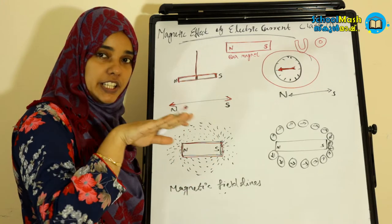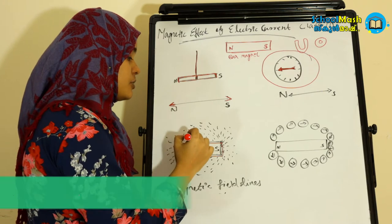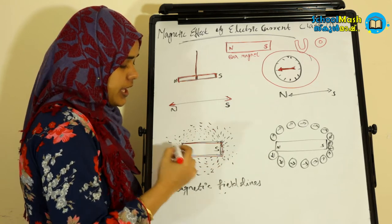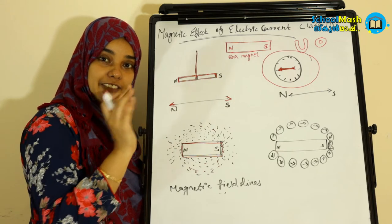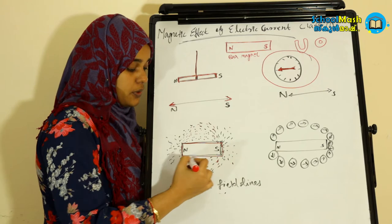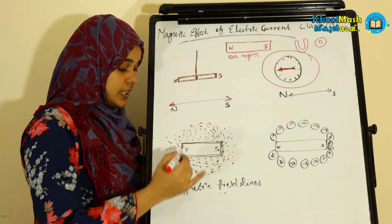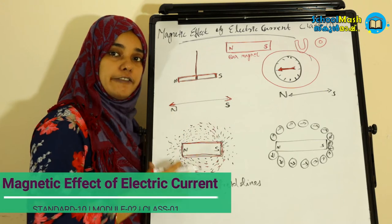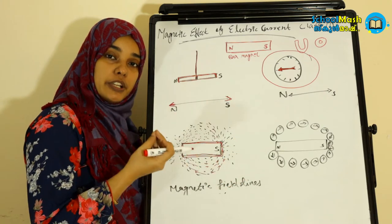Let's try to see a pattern using iron filings on a sheet of paper. We will arrange the iron filings. Now, we arrange the iron filings in a different pattern. That space or region around a magnet where we see a little bit of influence — we call that region a magnetic field.